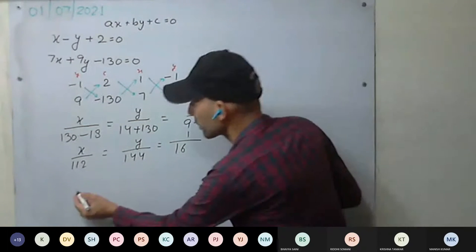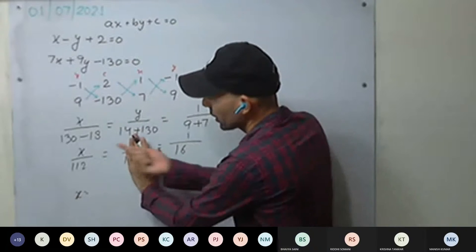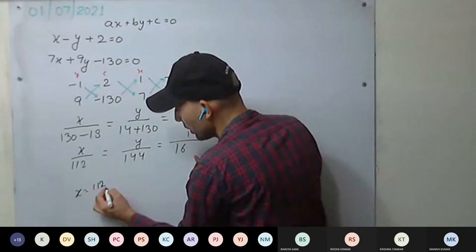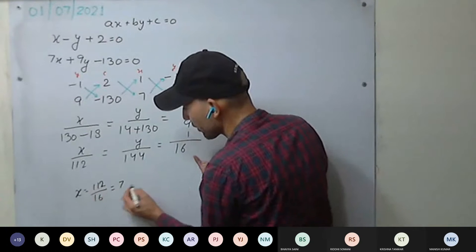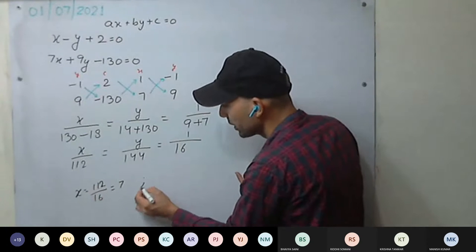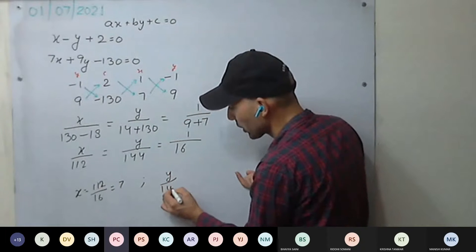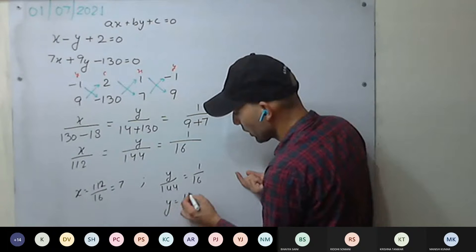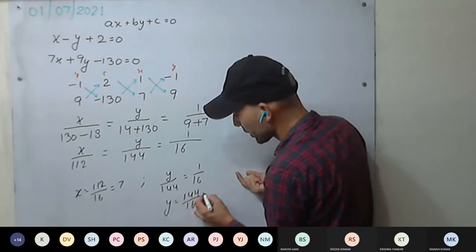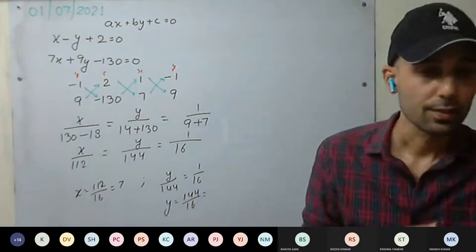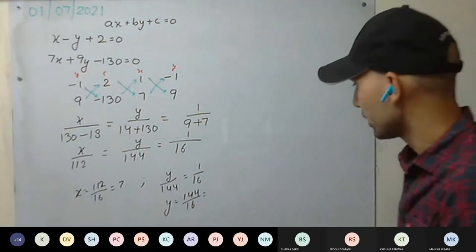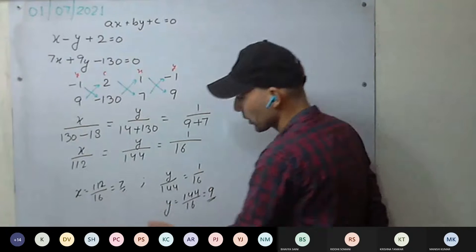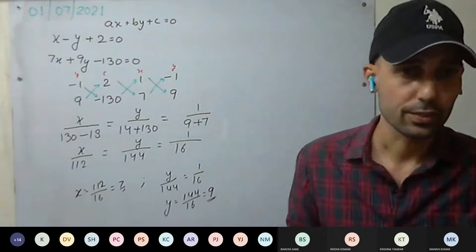X equals? Seven. We take the first and last: 112 divided by 16 — it is 7. Similarly for y: y upon 144, 1 upon 16, so y equal to 144 upon 16. How much is it? Nine. At last, write x equal to 7 and y equal to 9.